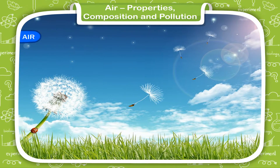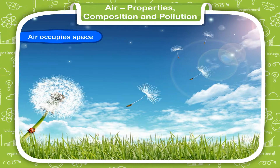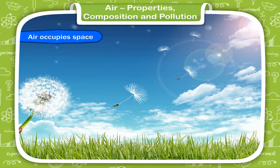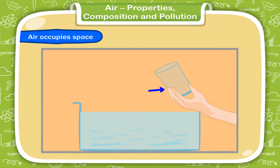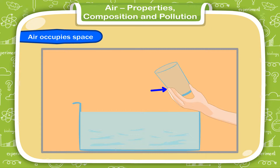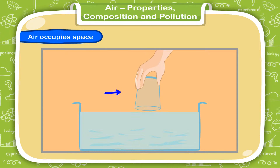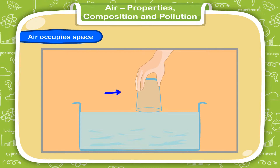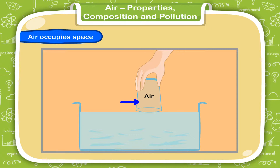Air occupies space. We know that air is everywhere around us, even though we do not see it. You can easily prove that air occupies space. Pour some water in a deep tray. Take an empty glass. Hold the glass upside down in such a way that its rim touches the water. Push the glass slowly into water without tilting it. You will see that water does not enter the glass. Why?